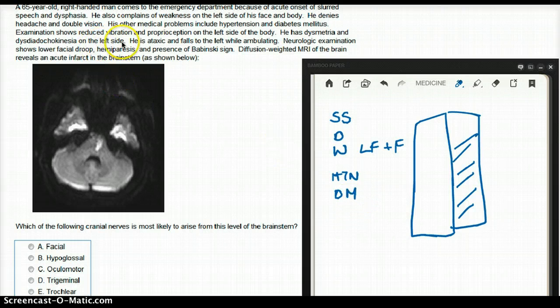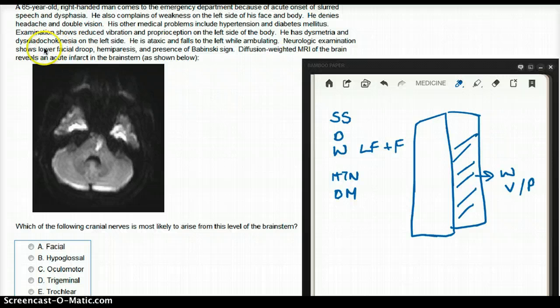Exam shows reduced vibration and proprioception on the left side of the body. So the left side not only has weakness, it has decreased vibration and proprioception. He has dysmetria and dysdiadocokinesia on the left side of the body. He is also ataxic and falls to the left while ambulating.